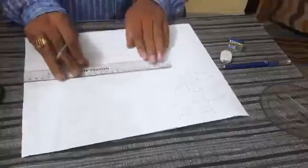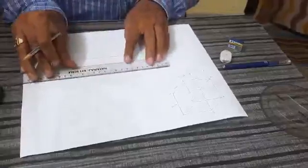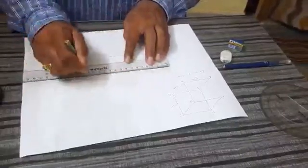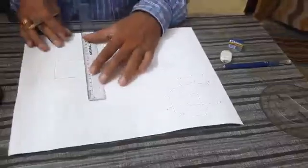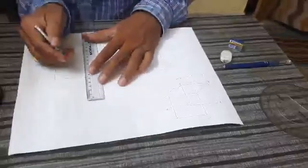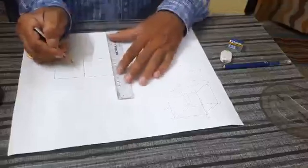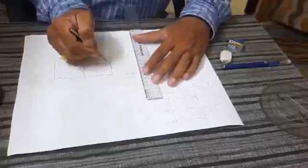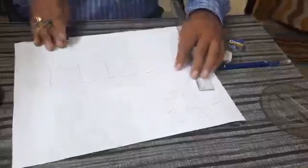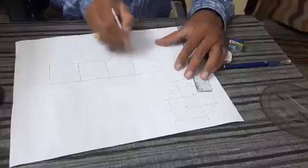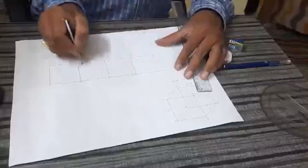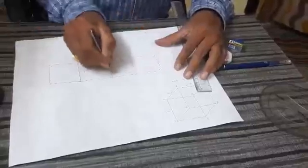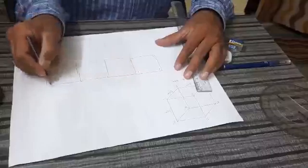Now join the points. And we'll name it as A, B, C, D, A, A dash, B dash, C dash, D dash, A dash.